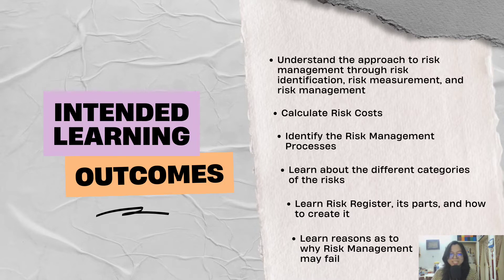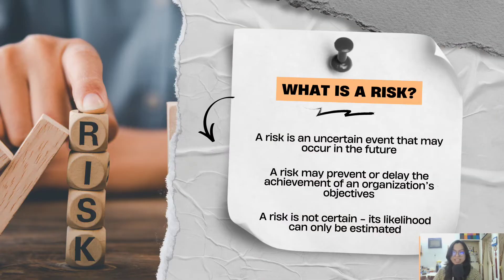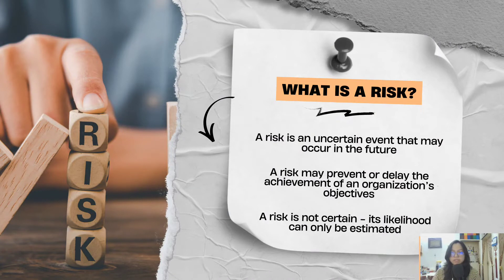And lastly, number six: learn reasons as to why risk management may fail. Since we have discussed the ILOs for this module, let us now proceed to the lesson proper. Let's talk about what a risk is. A risk is an uncertain event that may occur in the future. A risk is also known to be a factor that may prevent or delay the achievement of an organization's objectives. Lastly, a risk is not certain, as its likelihood can only be estimated.